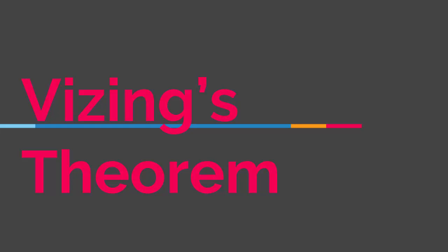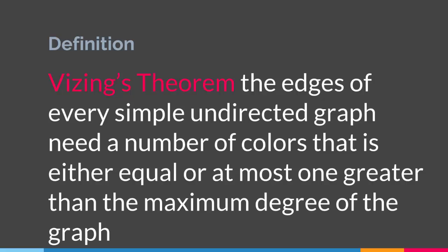Hello everyone. In this lecture we are going to talk about Vizing's theorem. Basically it says that the edges of every simple undirected graph — a graph that has no parallel edges and no loops — need a number of colors that is either equal to or at most one greater than the maximum degree of the graph.